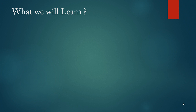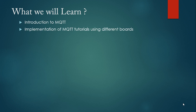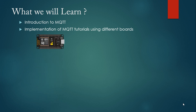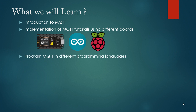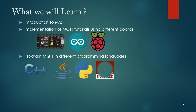We will learn the implementation of MQTT protocol with different boards, particularly ESP8266, ESP32, Arduino, and Raspberry Pi. We will implement MQTT in C++, Java, Python, Node-RED, and JavaScript programming languages, and also apply it in GUI applications.